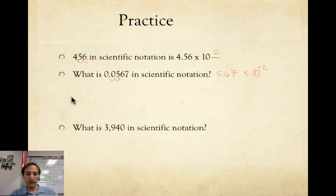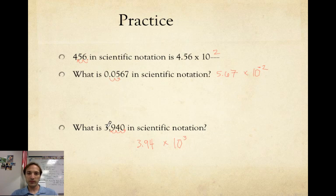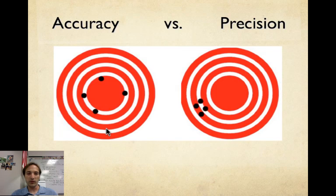Third example, 3940. Decimal, again, is hidden, so we draw it in. We go one, two, three spots to the left. That's going to give us 3.94 times 10. We moved it three spots to the left, so that's an exponent of three. And we went left, so it's positive. Another way of thinking of it is this is much greater than one, so it's positive. That is scientific notation.